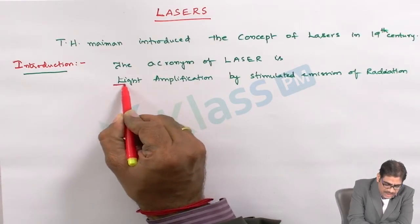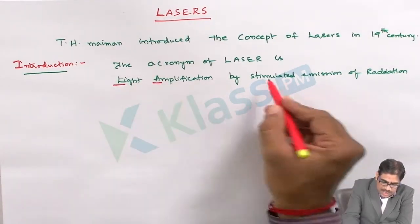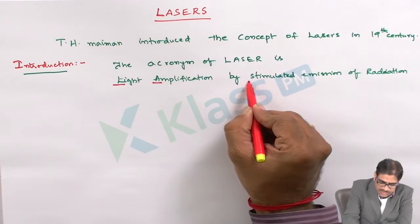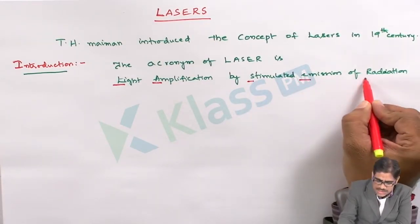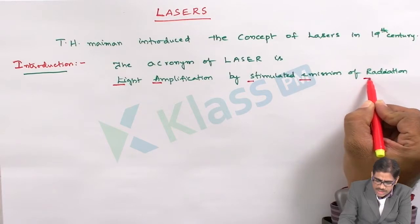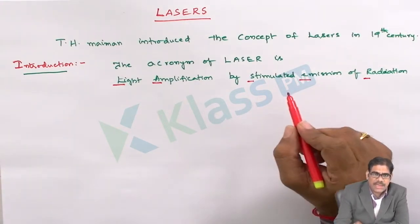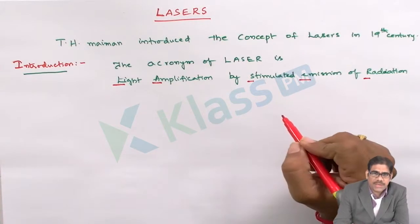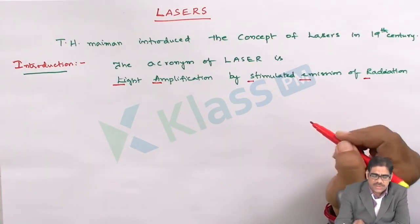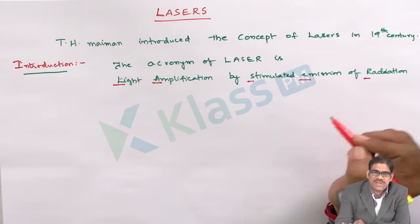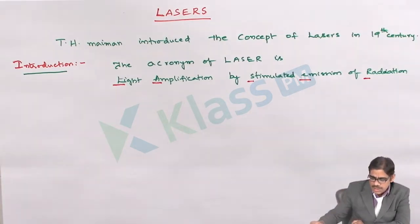L stands for Light, A stands for Amplification, S stands for Stimulated, E stands for Emission, and R stands for Radiation. So if a particular light gets amplified by a process called Stimulated Emission of Radiation, this is the process involved in the functioning of a laser.